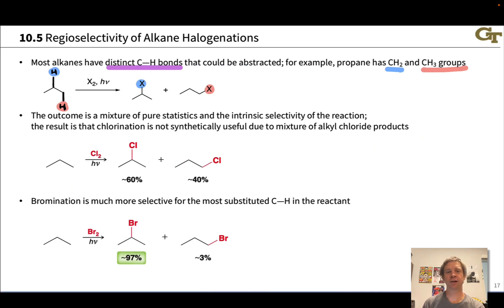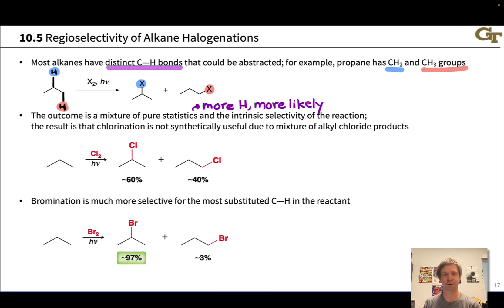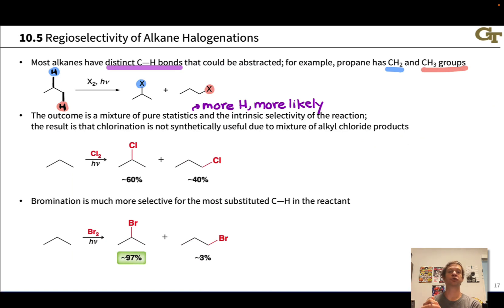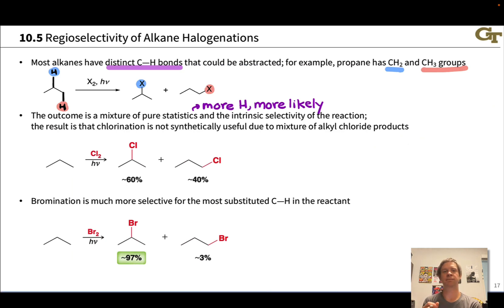The outcome in any given halogenation reaction is a mixture of pure statistics and the intrinsic selectivity of the reaction based on radical stability. Pure statistics comes into play because the more H's linked to a particular type of carbon, the more likely it is on pure statistics to abstract that hydrogen and generate the product derived from that abstraction. So CH3 groups having more hydrogens causes them to some extent to generate more of the product derived from abstraction at the methyl group.